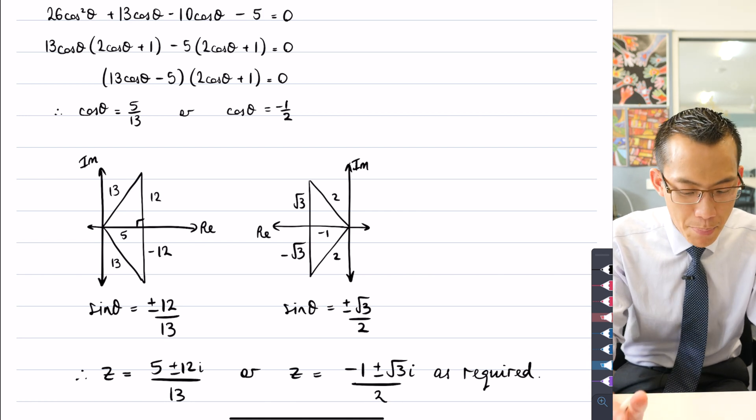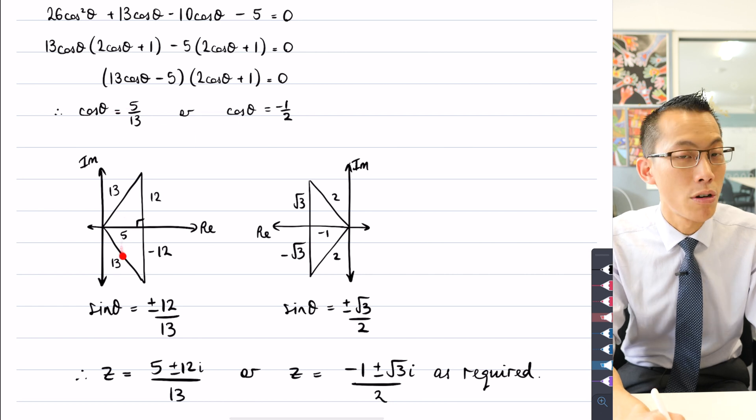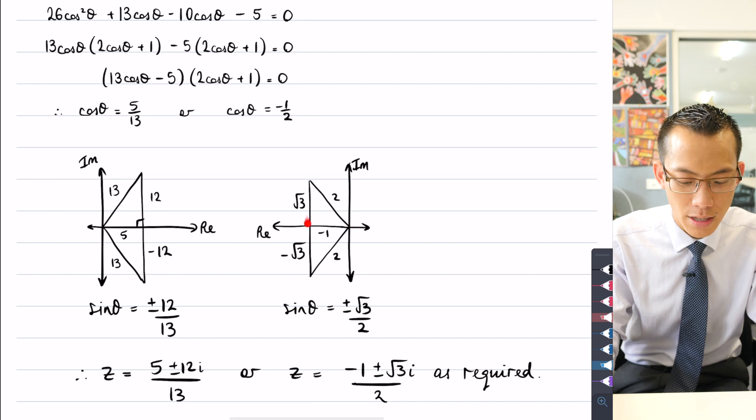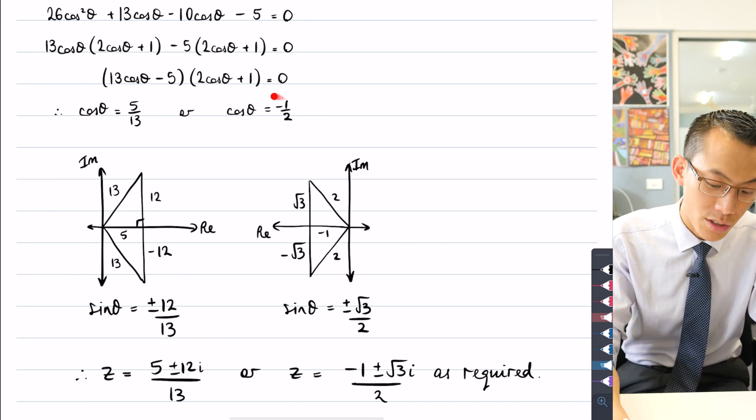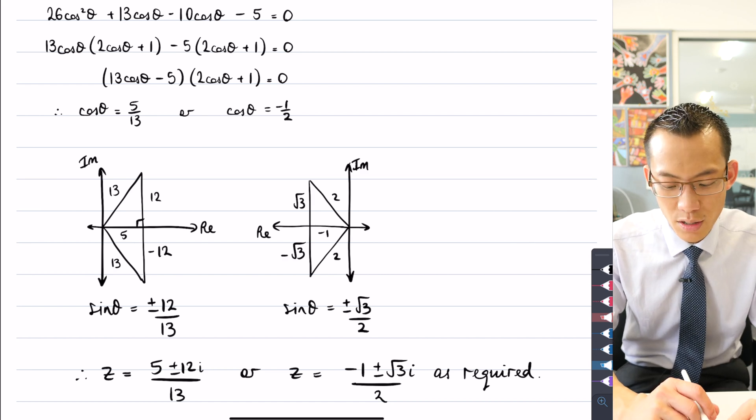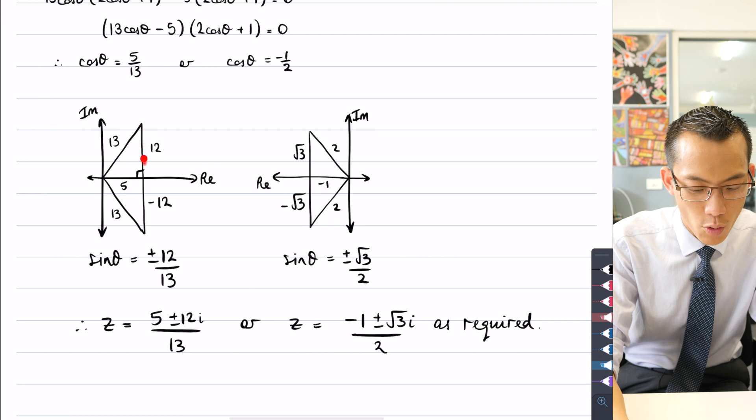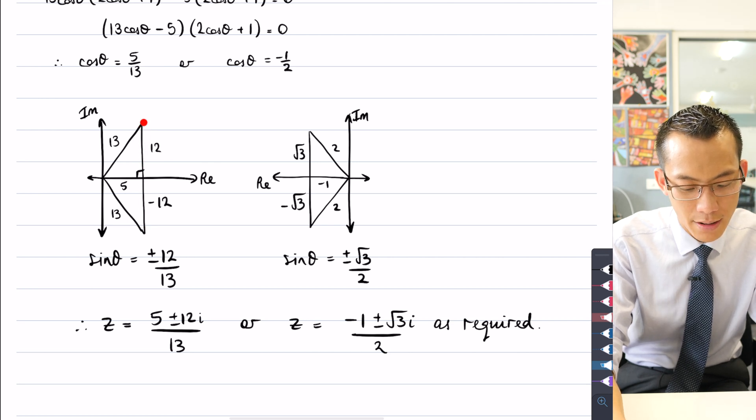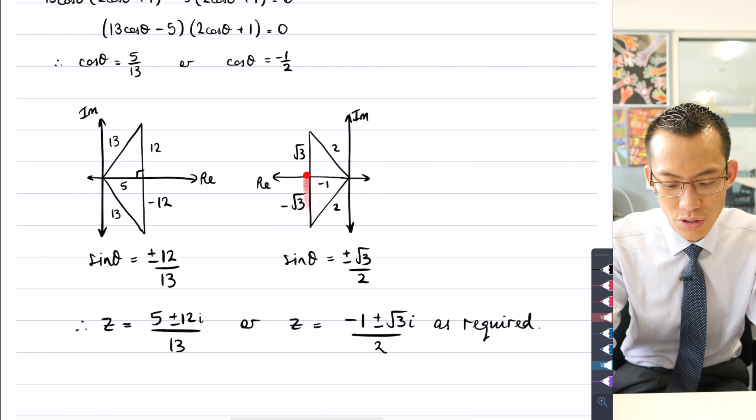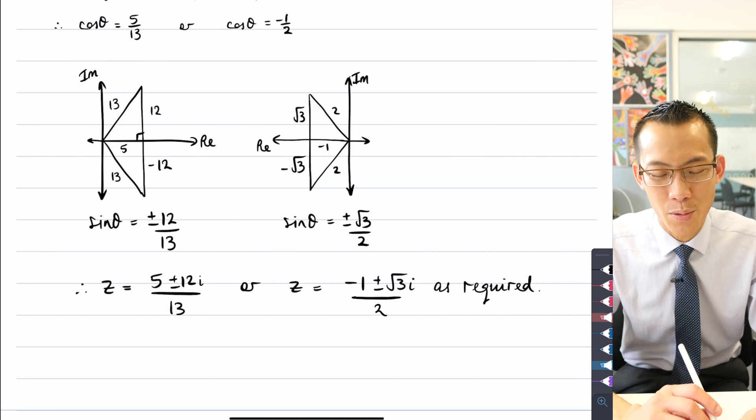So better answers put their cos diagrams onto an Argand diagram. So you can see here my triangles are going off to the left here, the left of the imaginary axis, because cos theta equals negative a half. That's the direction it's going in around the unit circle. So therefore you can work out what your plus or minus of the sine theta is because you've got conjugate solutions here and then a plus or minus of the sine solutions here, plus or minus root three on two, and that gives you the answer that was required.